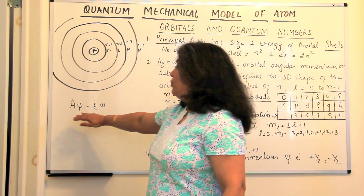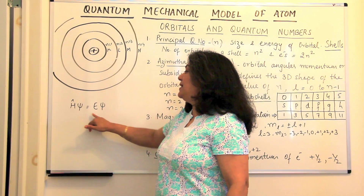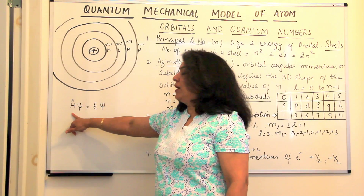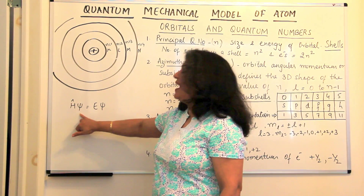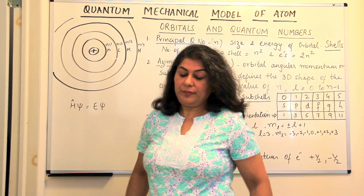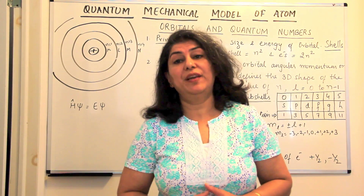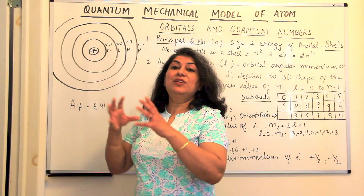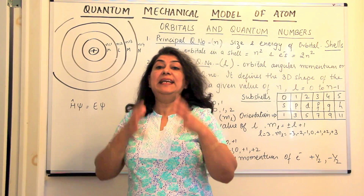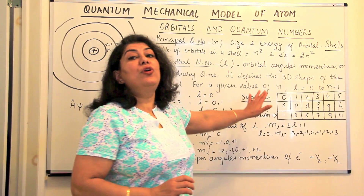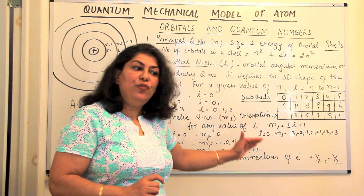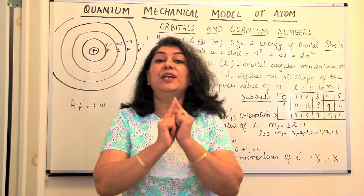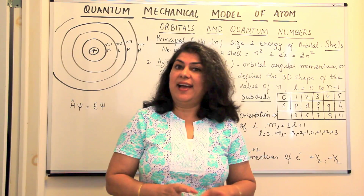Schrödinger gave his equation: Hψ = Eψ, where H is the Hamiltonian operator — a mathematical operator — and ψ is the wave function. When you solve the Schrödinger wave equation, we get the value of ψ, and the different values of ψ lead us to four quantum numbers. These four quantum numbers give us the exact address of each and every electron in an atom.